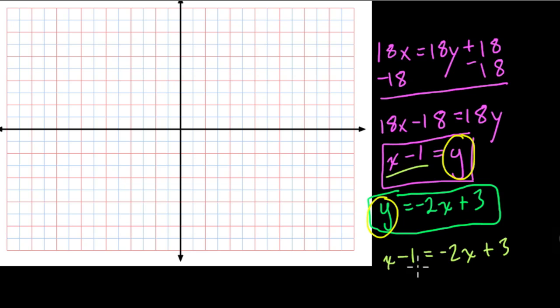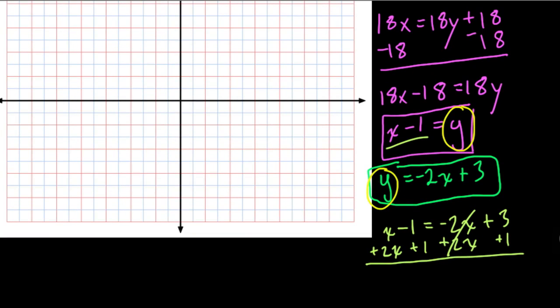If I solve for x here, I would probably add 2x to both sides, right, and add 1 to both sides. This helps me out. These cancel out. x plus 2x, that is 3x, of course. These cancel out. 3 plus 1 is 4. And what does x equal? But 4 over 3.